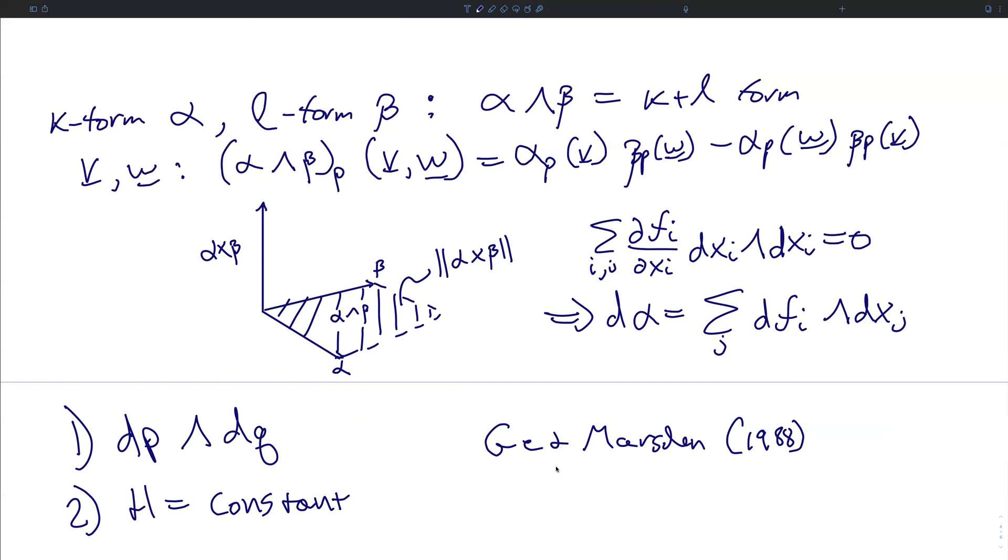In essence, the result here is that a Hamiltonian system would have to be fully integrable in the first place for such an integrator to exist. There cannot be a numerical scheme for non-integrable Hamiltonians in general that preserves both of these properties.